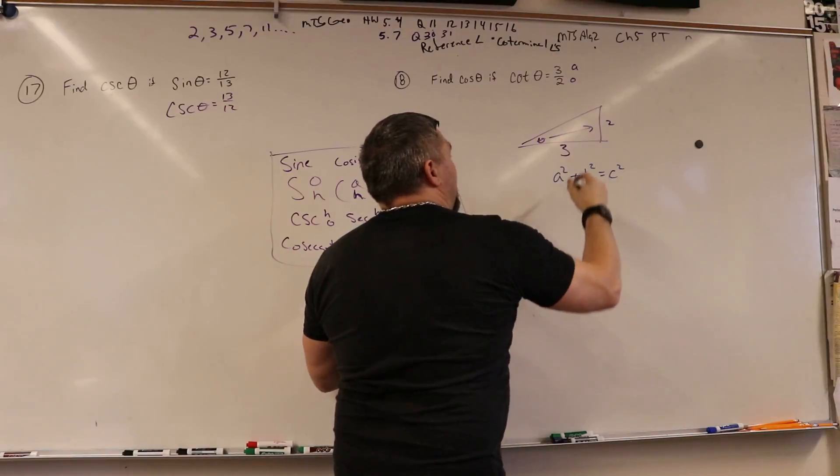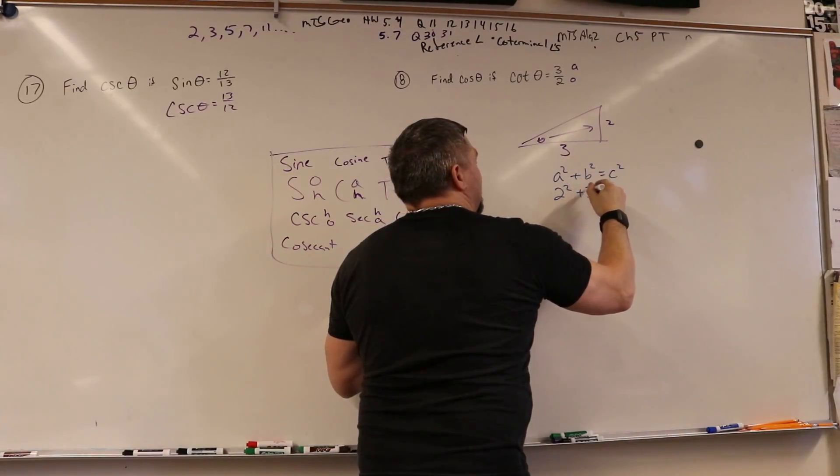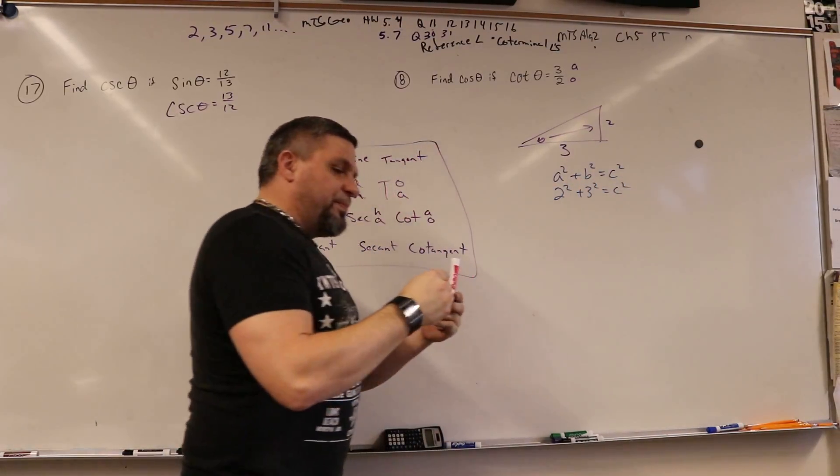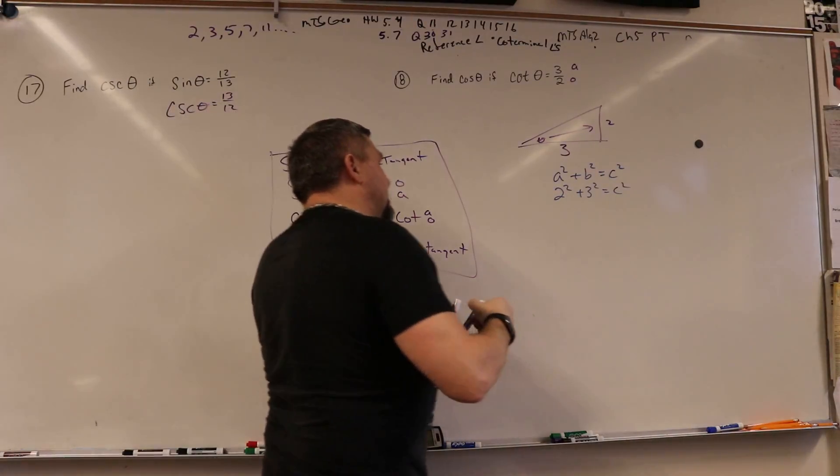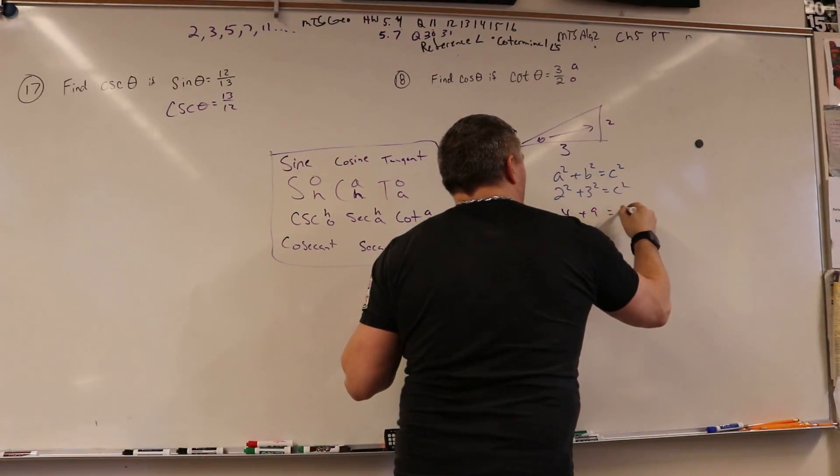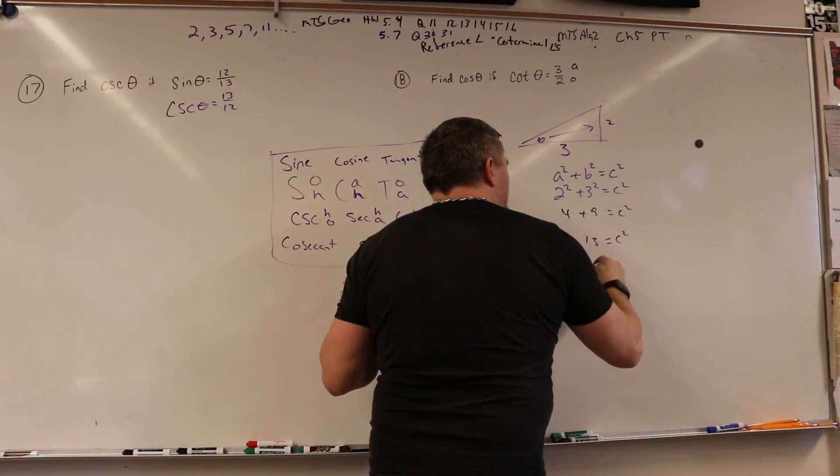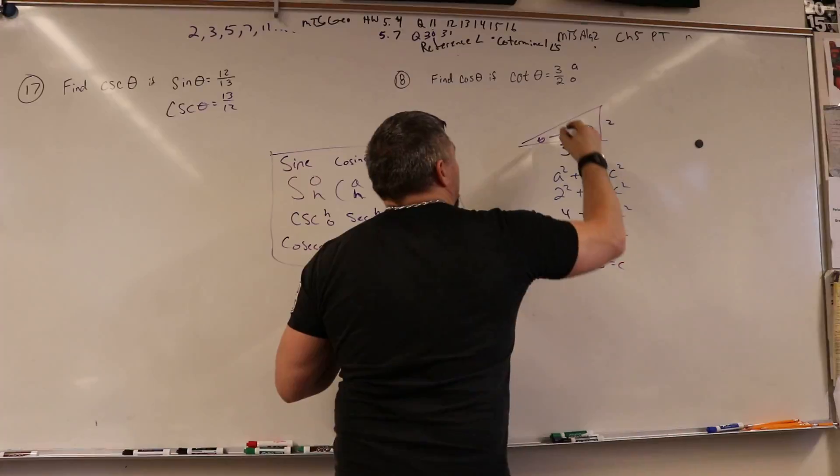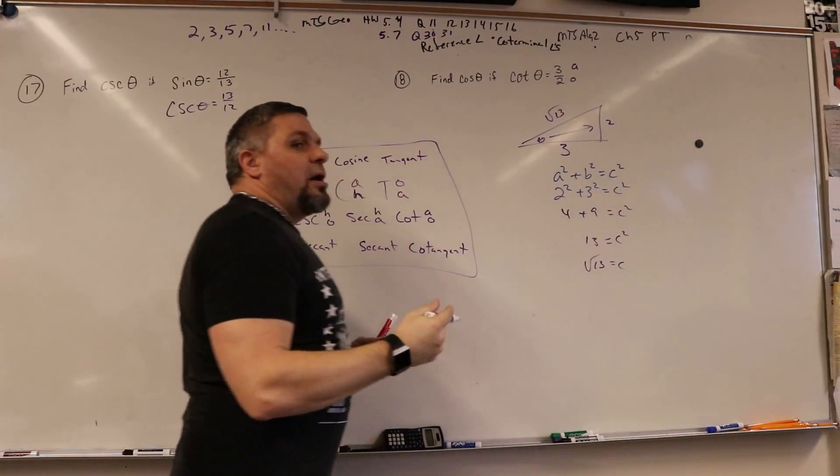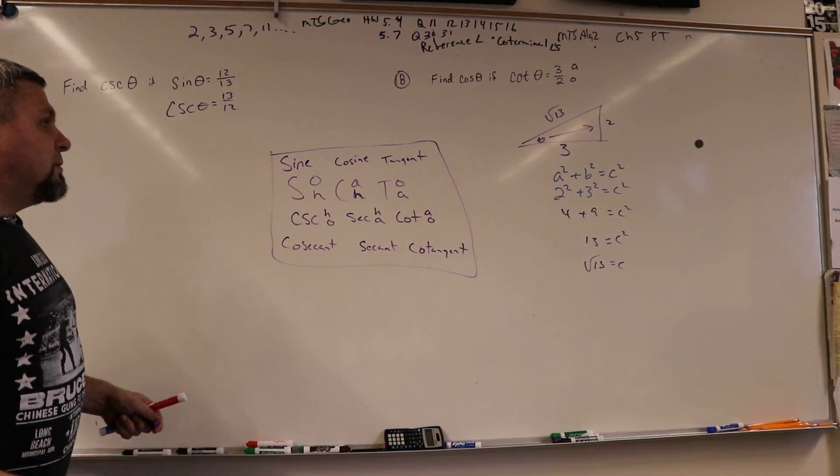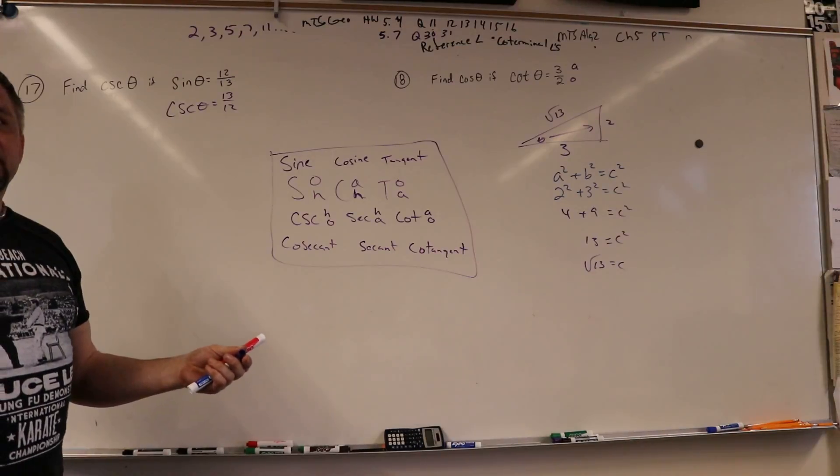So a squared plus b squared equals c squared. All right. And so now I have 2 squared plus 3 squared equals c squared. Right? Yep. So it's going to be 4 plus 9. Yep. So that's going to be 13 equals c squared, so the square root of 13 equals c. And now I know what the hypotenuse is.